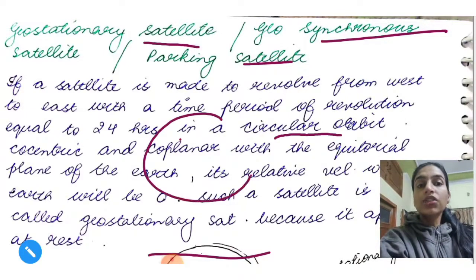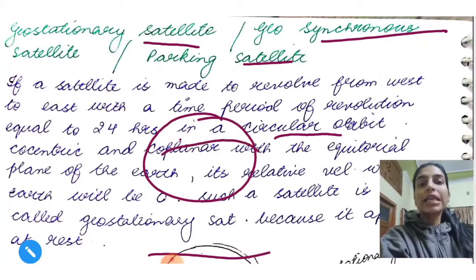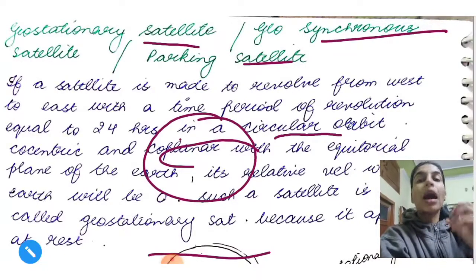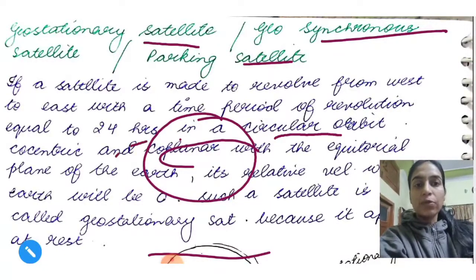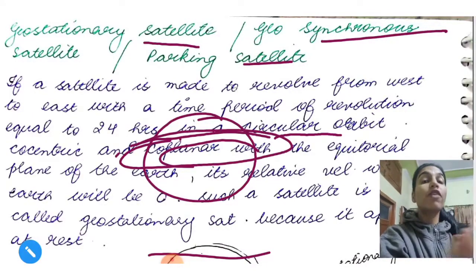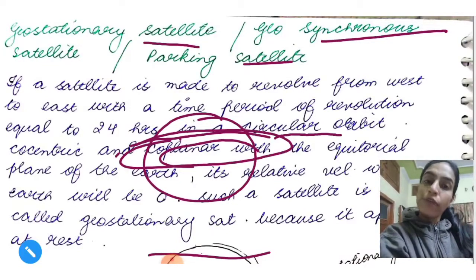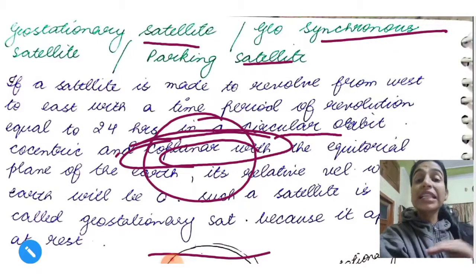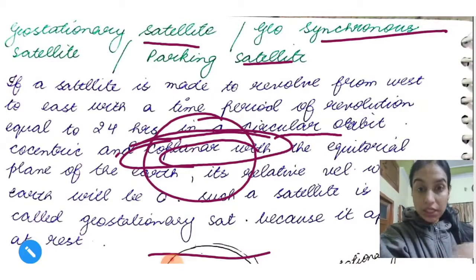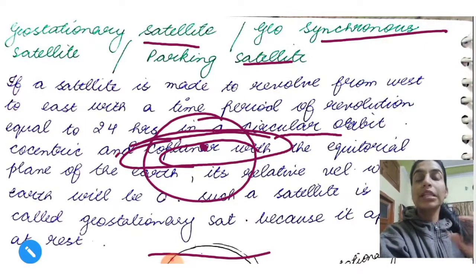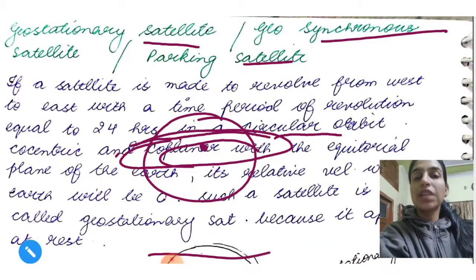Now see, the Earth, when it rotates, how does it rotate? It rotates this way, west to east. So if our satellite is, suppose this is a satellite, and it also revolves in this way, west to east. It is also taking 24 hours to complete one revolution. It is in the plane with the Earth's equator. And co-centric, both of the center, meaning the Earth's orbit and the satellite orbit, everything is the same. Then that type of satellite is known as geostationary satellite.